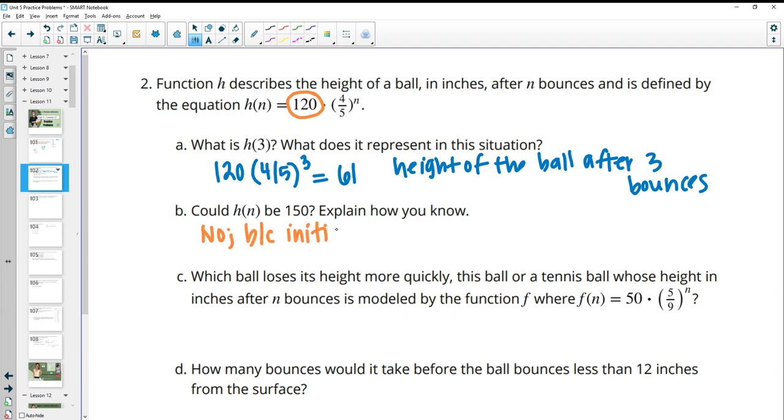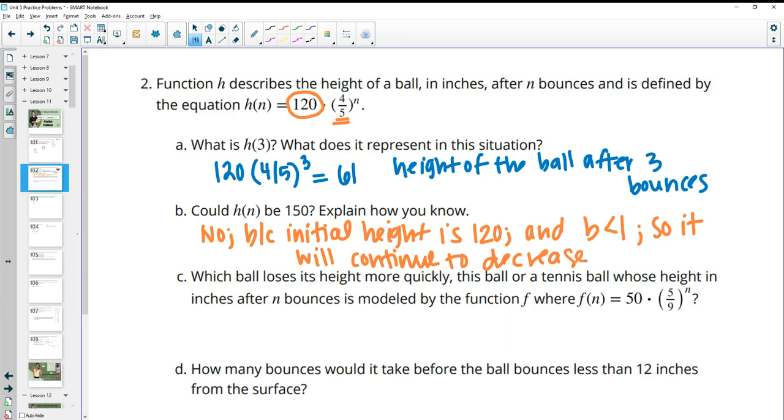And this would be no because the initial height of our ball is 120. So initial, like what they dropped it from, right? So the initial height is 120. And then we see that the growth factor is less than 1, meaning that the height is going to be less and less and less over time. And your growth factor is less than 1, so it won't get bigger. It'll just keep getting smaller. So it won't be able to go up to 150.